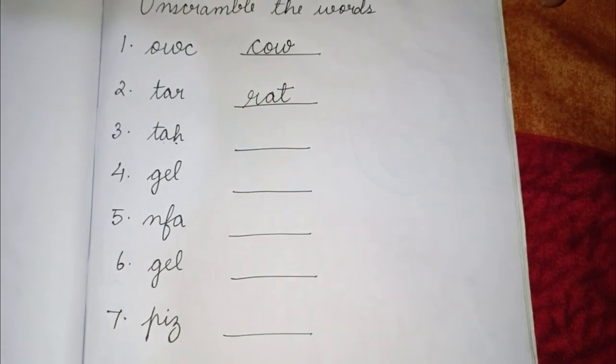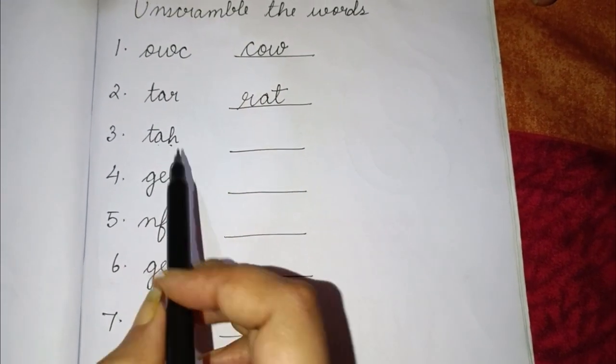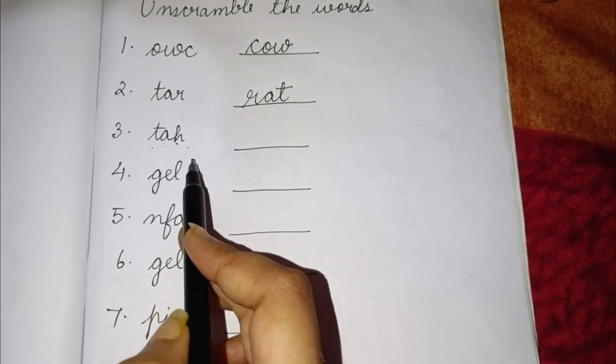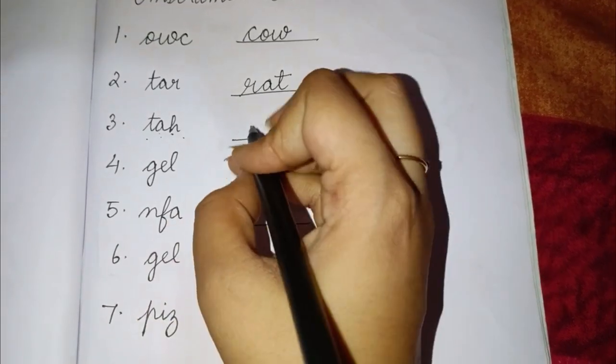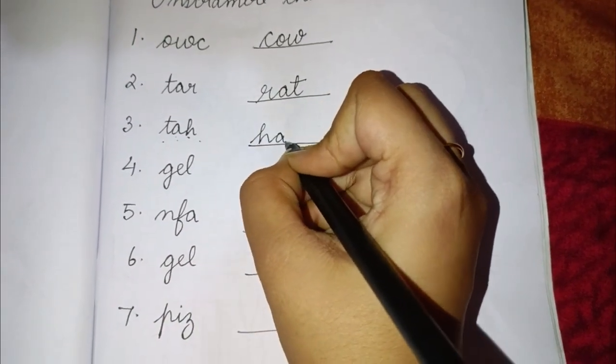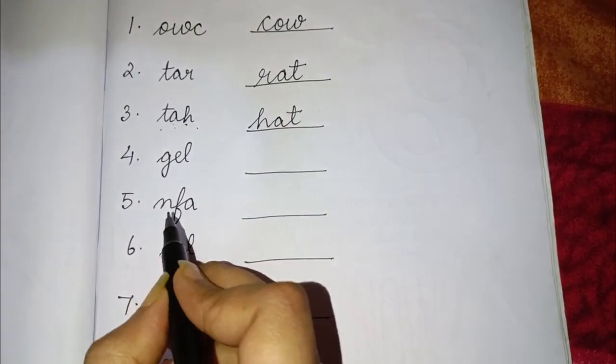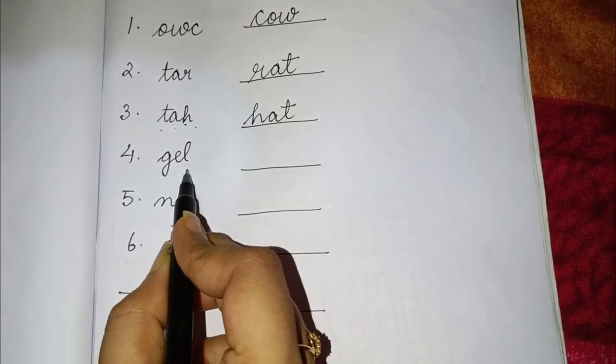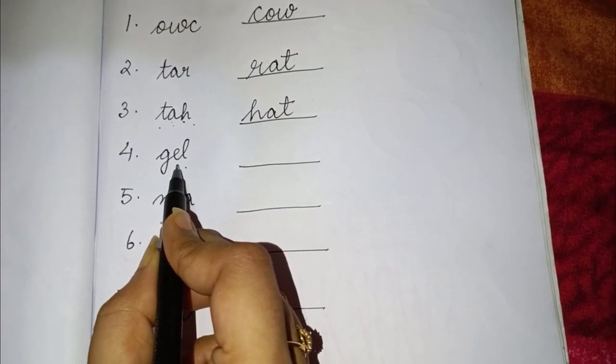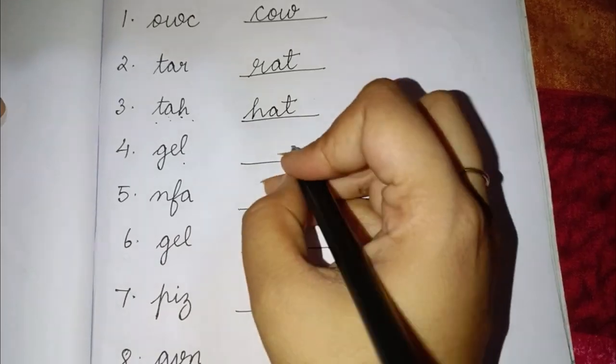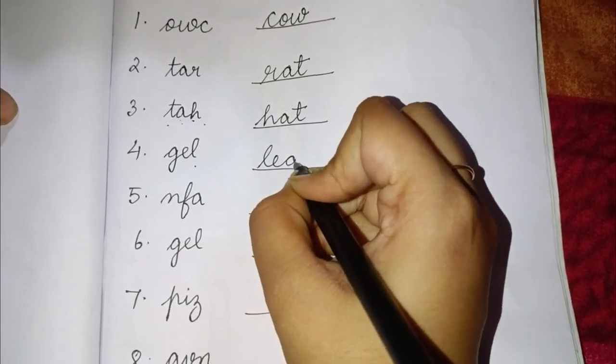Now the next word is T A H. This is also a wrong word. The correct word will be H A T hat. Next is G E L. This is also wrong. The right word will be L E G leg.